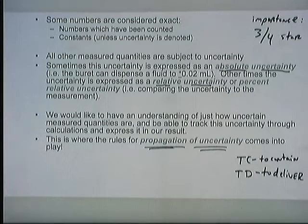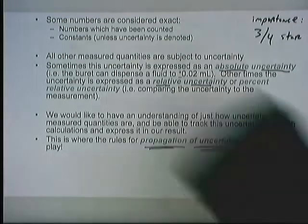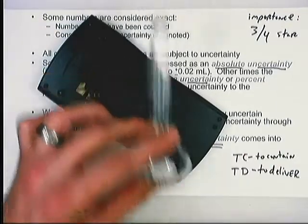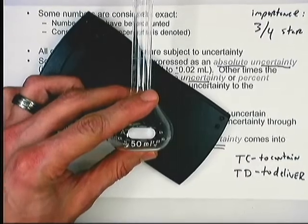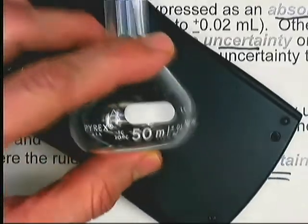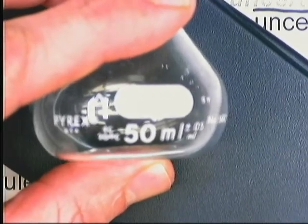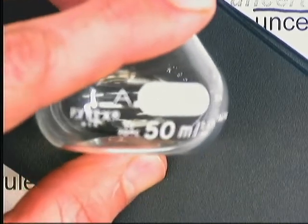Before we dive into a sample problem to show how propagation of uncertainty works, I want to rehash the idea of tolerances of glassware. I've got a 50 milliliter volumetric flask here, and I want to zoom in so you can see what's written on the side, because I think that's an important part of this discussion.